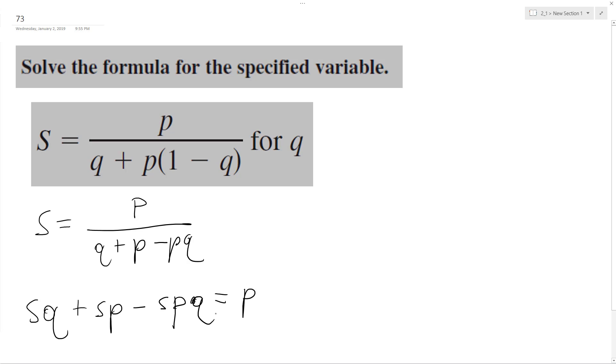And then what I'm going to do, so Q, I'm going to move SP over to the right. So I have SQ minus SPQ, P minus SP.